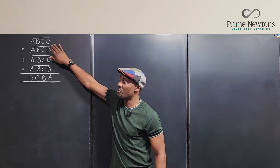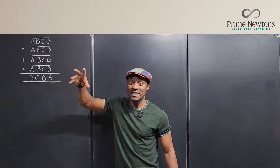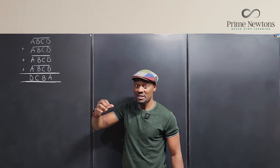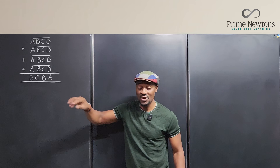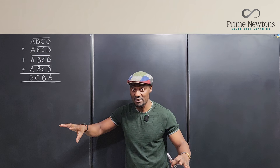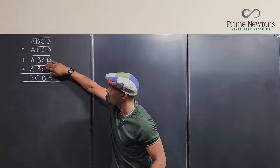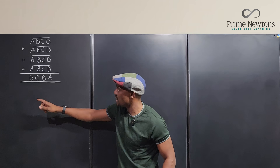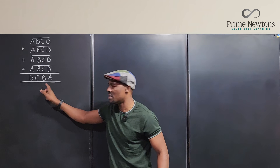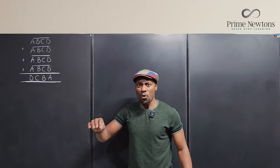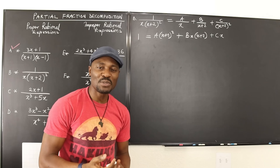This is a four-digit number with unique digits, meaning a ≠ b, b ≠ c, and c ≠ d — all digits are different. We add this number to itself four times and the answer becomes DCBA. What is the number? Let's get into the video.